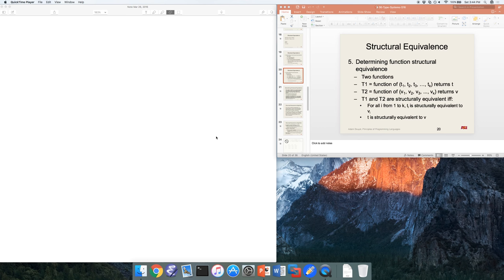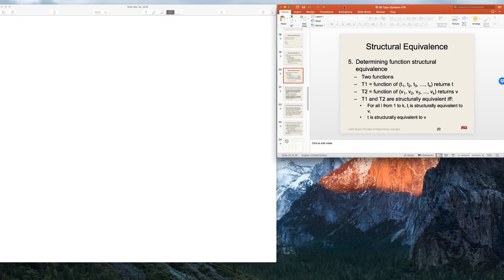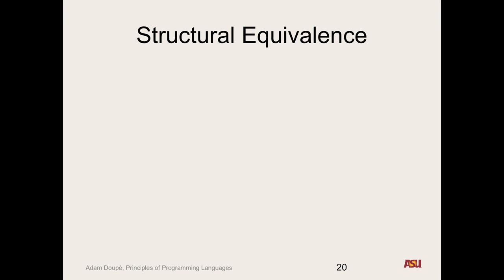Hello everyone, all of my lovely 340 students. This is the recorded lecture for March 28th. Unfortunately, I will be out of town, so we're going to keep the momentum of the class going and continue right where we left off. So if you recall, on the Monday before the midterm, we were talking about type equivalence — specifically, in a type system, how can the type system tell if two types are the same.